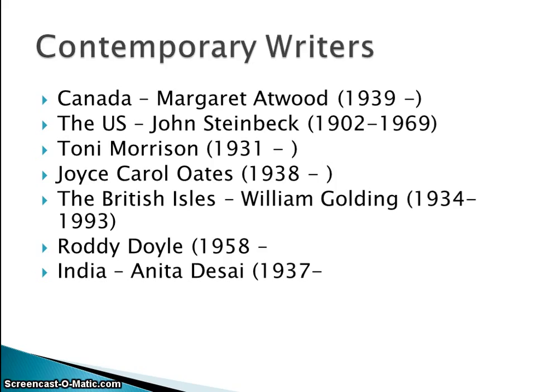Also from the U.S., John Steinbeck, whose greatest success was The Grapes of Wrath, which came in 1939. It describes how a family from Oklahoma are driven to migrate to California, where they are mistreated and exploited. He is also famous for Of Mice and Men, among others, and Steinbeck was awarded the Nobel Prize for Literature in 1962.